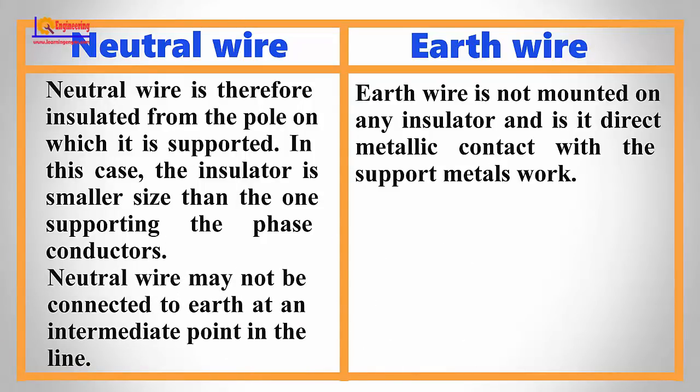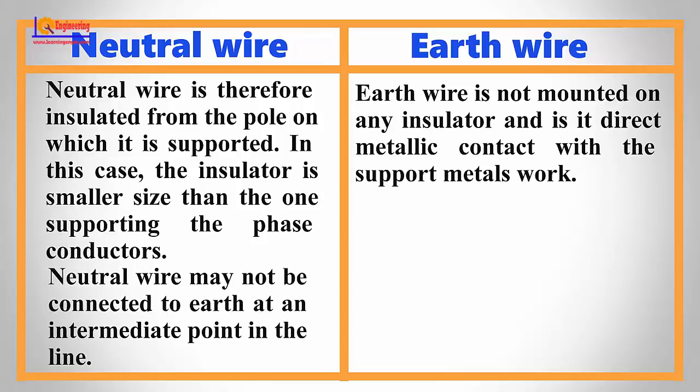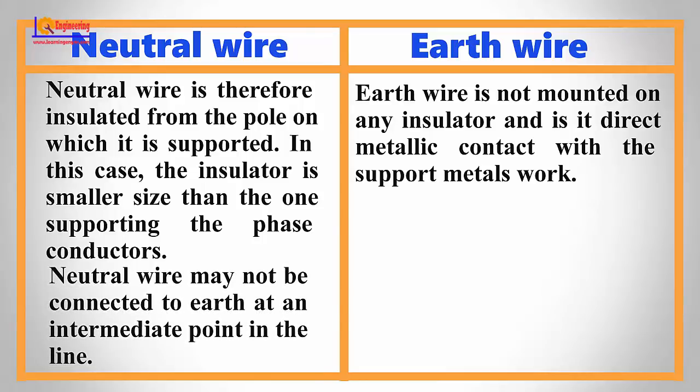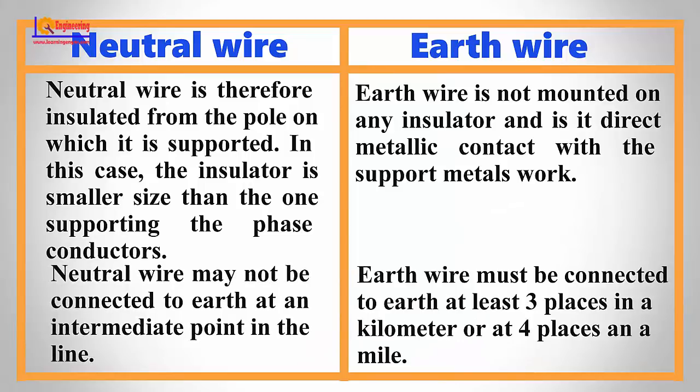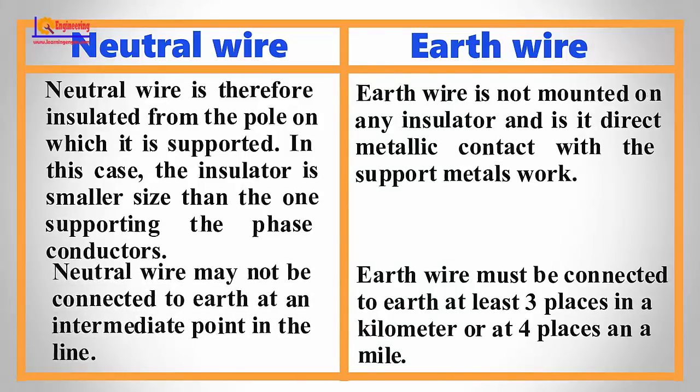Neutral wire may not be connected to earth at an intermediate point in the line. Earth wire must be connected to earth at least three places in a kilometer or at four places in a mile.